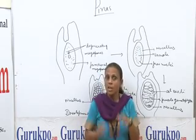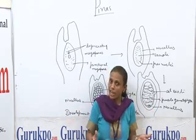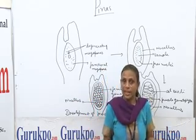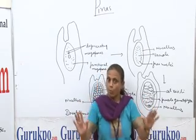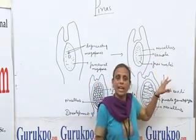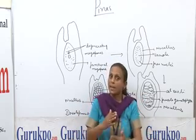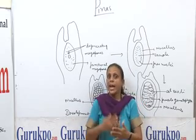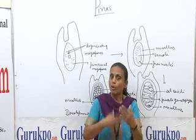Regarding pollination in Pinus, a secretion oozes out from the micropyle of the ovule which entraps the pollen grains. This secretion comes out during the night and remains on the tip of the micropyle till the next morning. During fertilization, one of the male gametes fuses with the egg to form the zygote, and the other male nucleus, tube nucleus and stalk nucleus degenerate. The zygote then functions as the mother cell of the sporophytic phase.